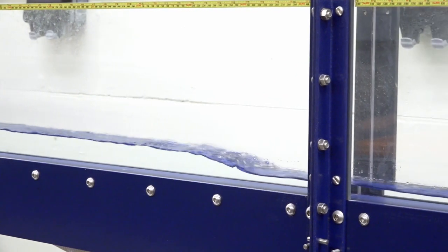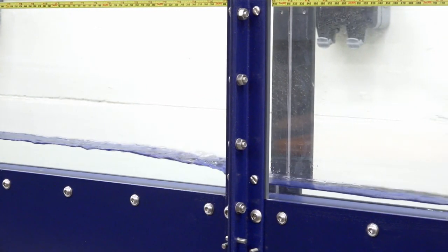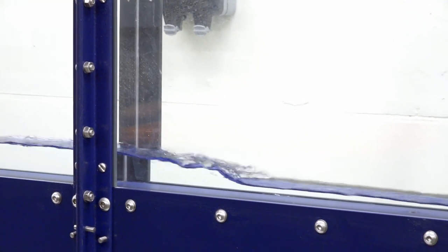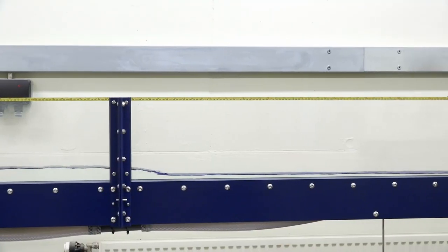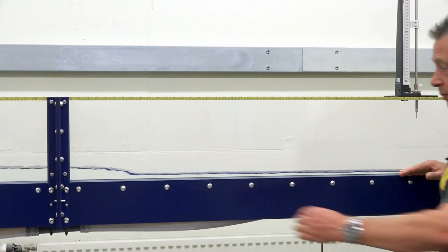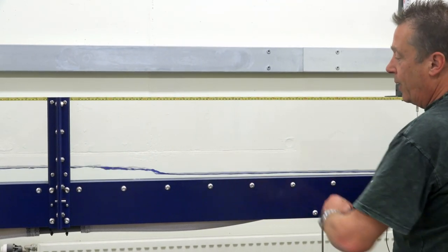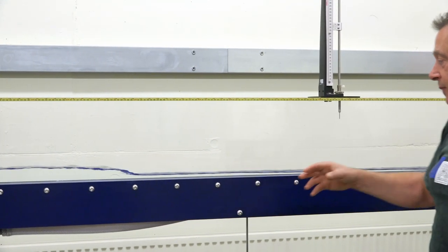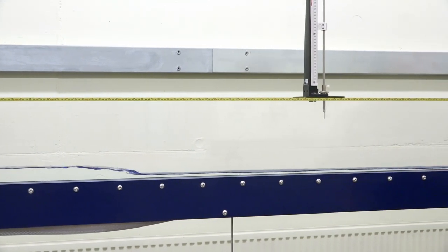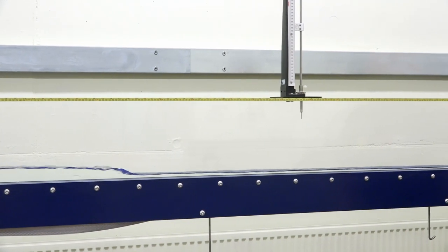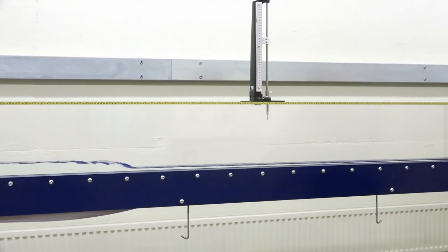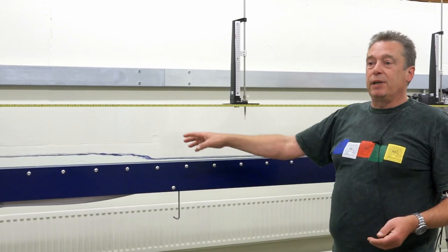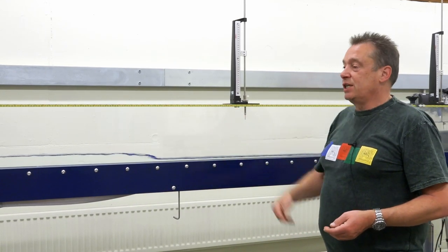This is going to move down the channel and keep going until it reaches a point of equilibrium. The forces going this way will equal the forces coming that way. At that point, the wave will stop, and unless we alter the sluice gate on the right or the downstream weir on the left, this will stay in position.